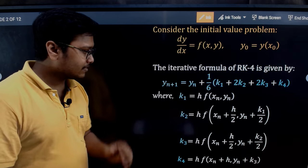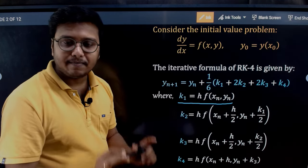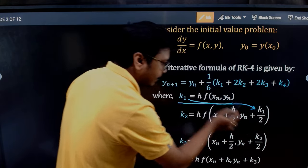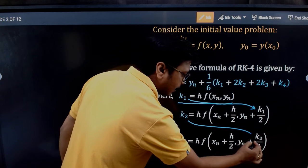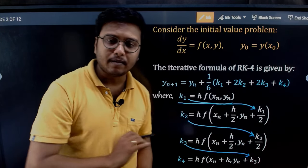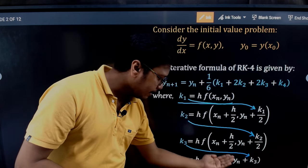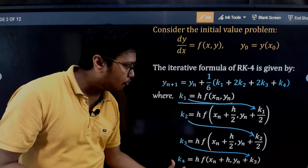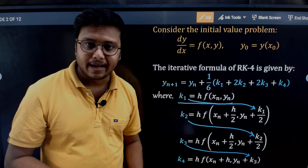An important note: k1 is found independently. For k2 we use k1, for k3 we use k2, and for k4 we use k3. All these formulas are interlinked — we cannot find any one of them without finding the previous ones. Once we have k1 through k4, we plug those values into the main iterative formula to get the value of y.